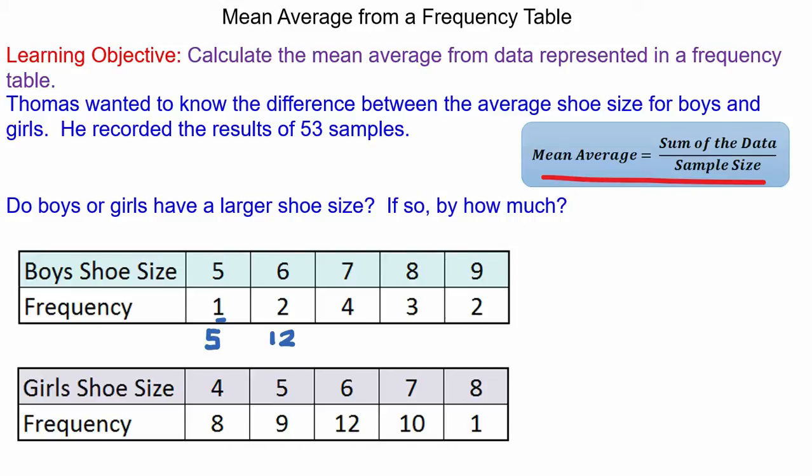Four boys have a shoe size of seven then that would be twenty-eight. Three boys have a shoe size of eight then that would be twenty-four and two boys have a shoe size of nine then that would be eighteen.